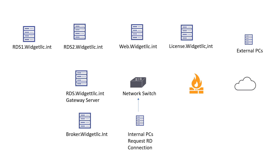Let's start with an internal PC — say a Windows 10 or Windows 11 computer trying to connect to remote desktop. It connects from its computer to the network switch. Besides having access from inside your network, you might also see external PCs connecting from somewhere outside, such as from their home, a hotel, or some other location. They may VPN in first and then go into your network through the firewall. Either way, they all end up at the network switch.